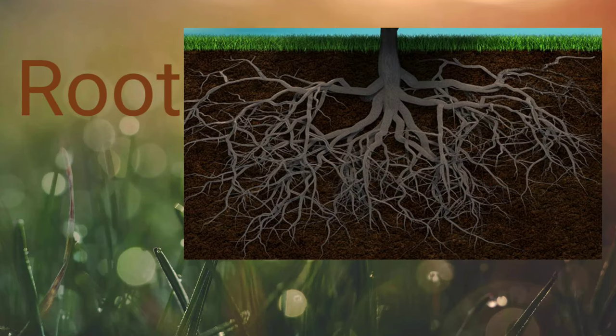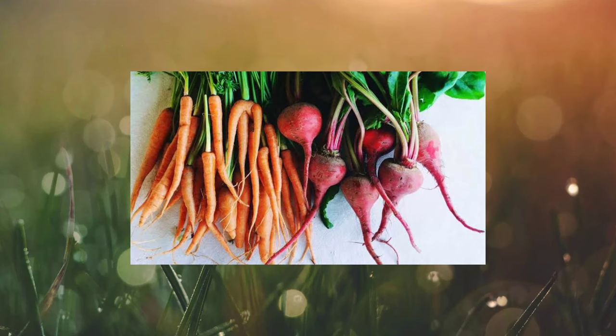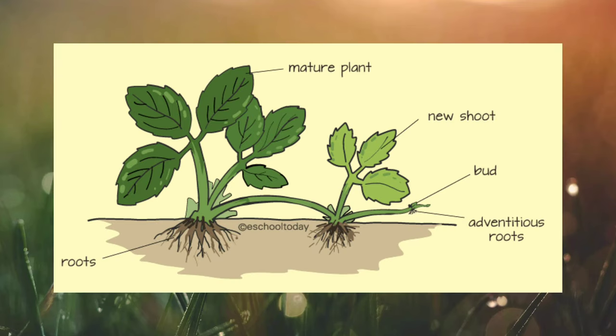Root. Roots grow deep into the soil. They hold the soil firmly and help the plant to stand without falling down. They also help the plant to absorb water and minerals from the soil. In few plants, roots also have other functions. In plants like carrot and beetroot, the roots store food materials inside them. In few plants like jasmine, the roots help in reproduction by the process called vegetative propagation.